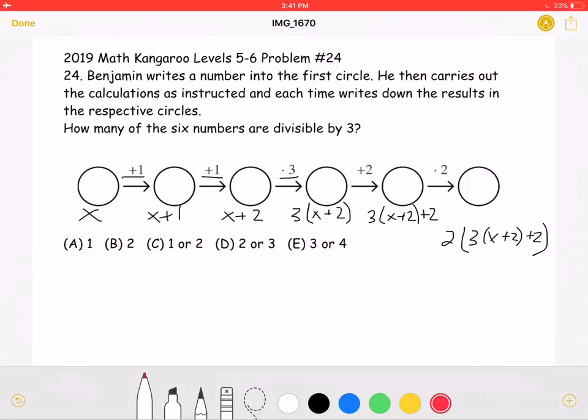The question asks for how many of the six numbers are divisible by 3. Let's start by noting that this number over here must be divisible by 3 as it is 3 times the quantity of x plus 2. So we know we have at least one number that's definitely divisible by 3.